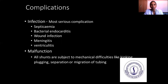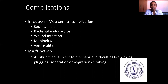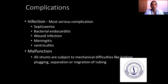Complications of the shunt: infection is the most serious complication, including septicemia — where the blood itself is infected — bacterial endocarditis, wound infection, meningitis, and ventriculitis. Malfunction: all shunts are subject to mechanical difficulties like kinking, obstruction, separation, or migration of the tubing.